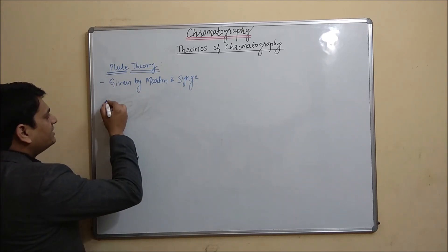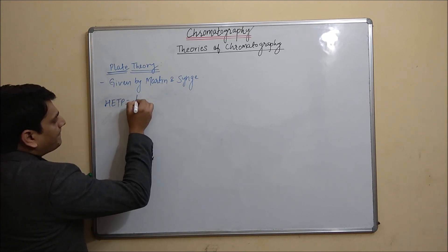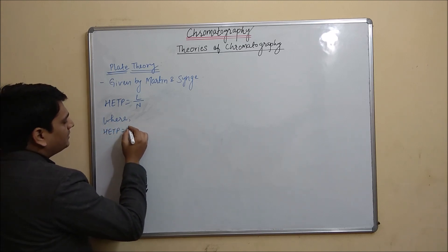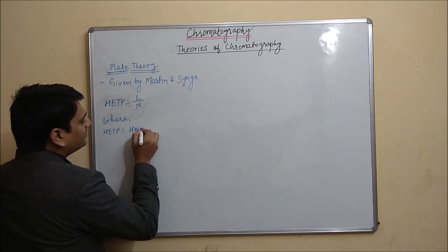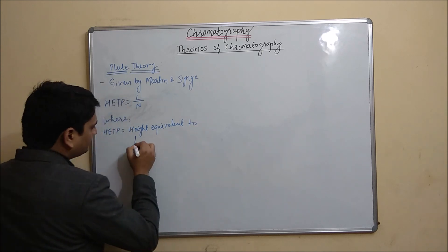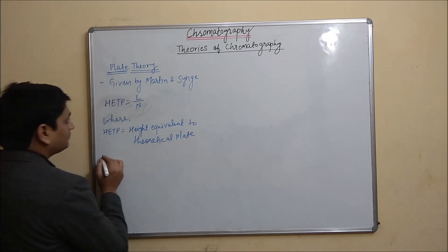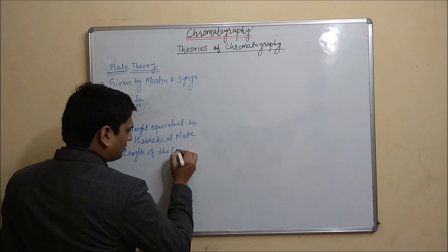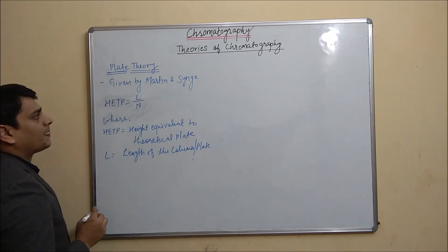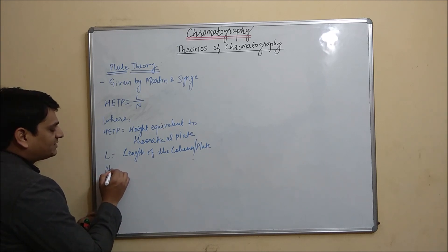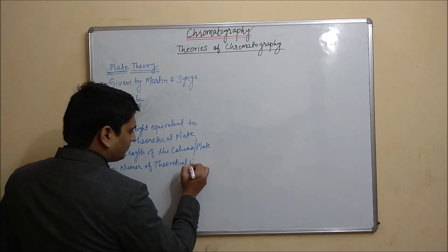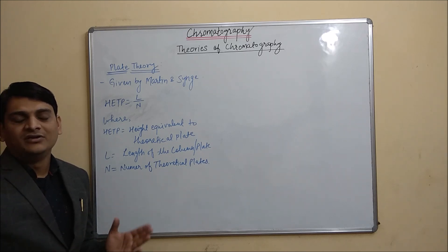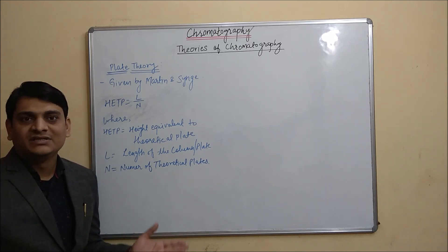According to plate theory, HETP is equal to L by N, where HETP is Height Equivalent to a Theoretical Plate, L is equal to the length of the column or plate, and N is equal to the number of theoretical plates. This is the equation for HETP: HETP equals L divided by N.